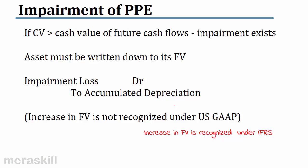Let us also look at impairment and disposal. What is impairment? When the value of the asset is impaired or damaged, the value is reduced. Impairment of property, plant and equipment: if the carrying value — the value that you have in the books — is greater than the cash value of the future cash flows, impairment exists.